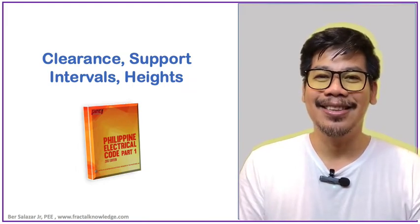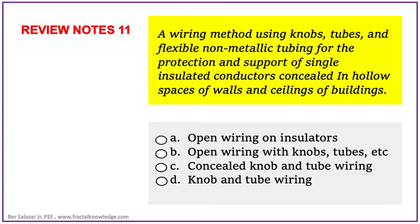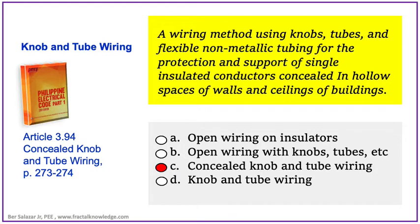Let's proceed. An example problem commonly asked in board exams is related to Article 3.94, page 273. The problem describes a wiring method using knobs, tubes, and flexible non-metallic tubing for the protection and support of single insulated conductors concealed in hollow spaces of walls and ceilings of buildings. From the choices — open wiring on insulators, open wiring with knob and tubes, concealed knob and tube wiring, or knob and tube wiring — the correct answer is letter C: Concealed Knob and Tube Wiring.